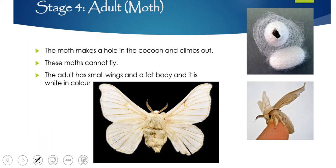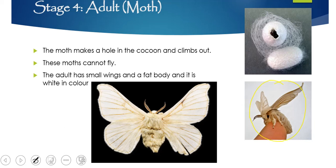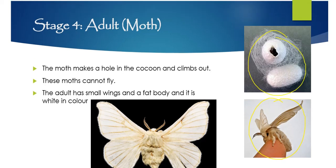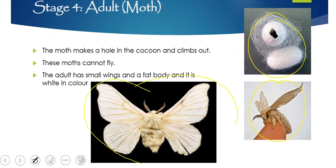Interestingly, these moths can't fly. The reason is that the adult has smaller wings and a fairly fat, furry body, so they can't actually fly. They become adults and then lay eggs shortly after. You can see the little hole they make to exit and the picture of the adult silkworm moth.